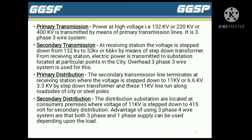The next part is primary distribution. The secondary transmission line terminates at a receiving station where the voltage is stepped down to 11 kV, or 6.6 kV, or 3.3 kV by a step-down transformer. The next part is secondary distribution — the distribution substations are located at the consumer's premises, where the voltage of 11 kV is stepped down to 415 volts, that is three-phase four-wire, for secondary distribution.